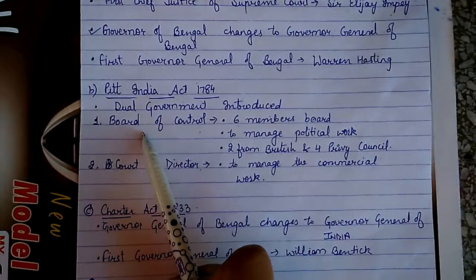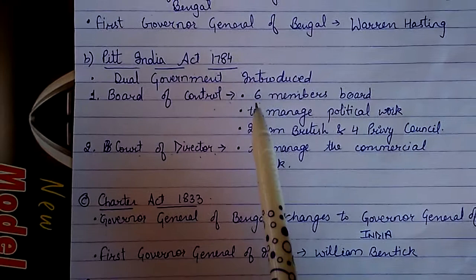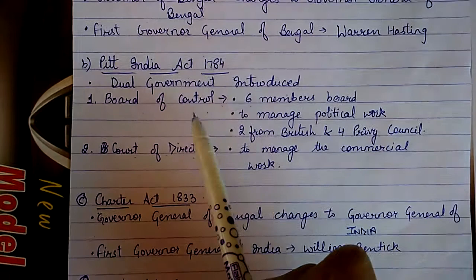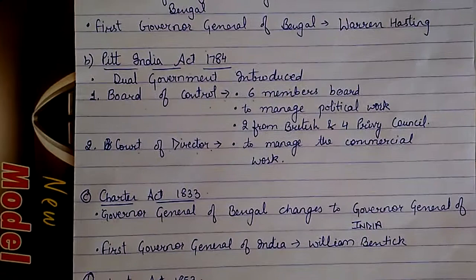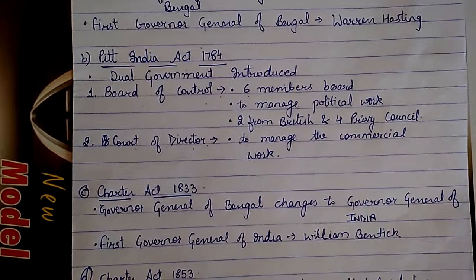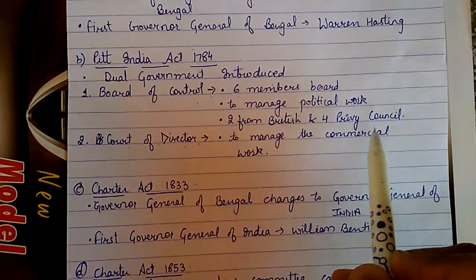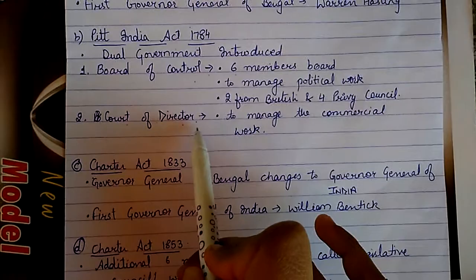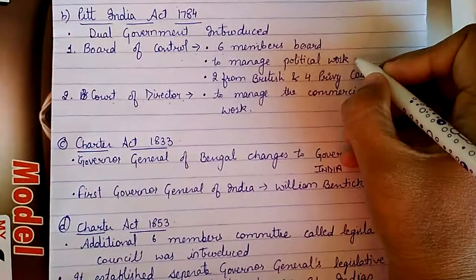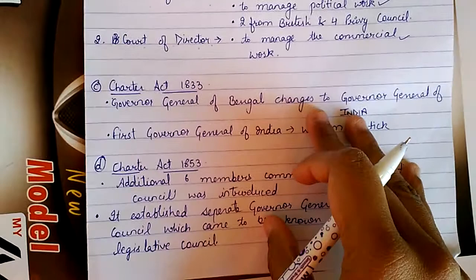The dual government consisted of two boards: the Board of Control and the Court of Directors. The Board of Control had six members — two of whom were British, and four were from the provincial council in India. The Board of Control was created to manage political works, while the Court of Directors was established to manage commercial work. Thus, dual government separated political and commercial functions.